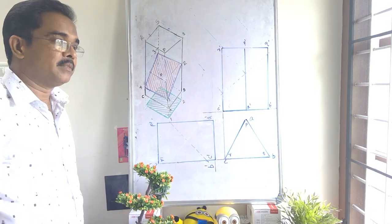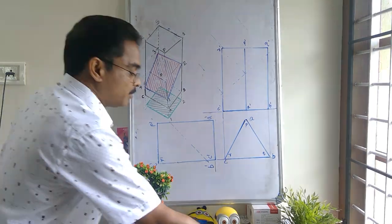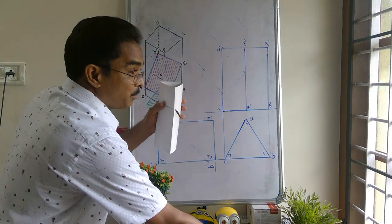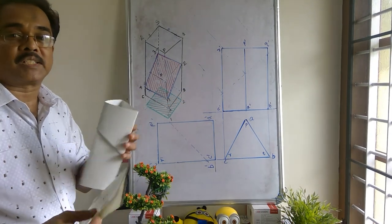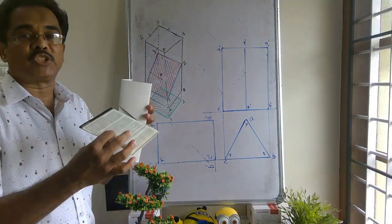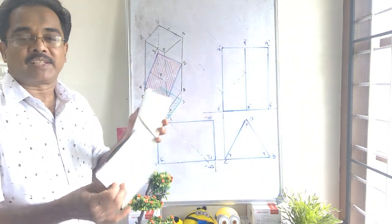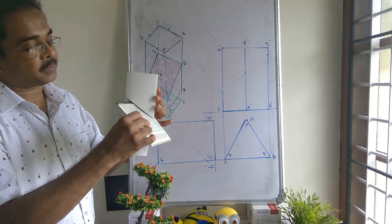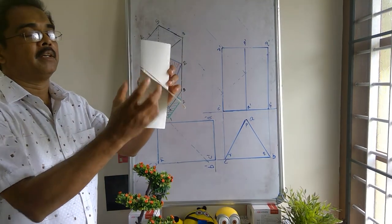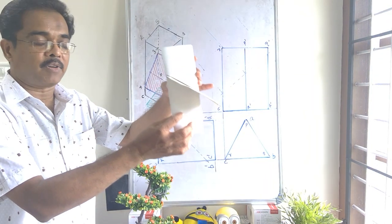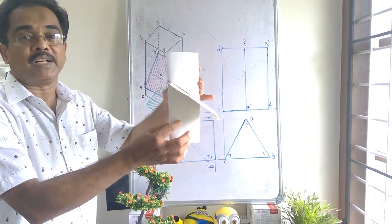So today we take a simple case, a prism. A triangular prism is being cut by a section plane inclined to HP, say 40 degree to HP and by certain gas. So this is our process. Triangular prism cut by a section plane, 45 degree to HP, by certain gas.